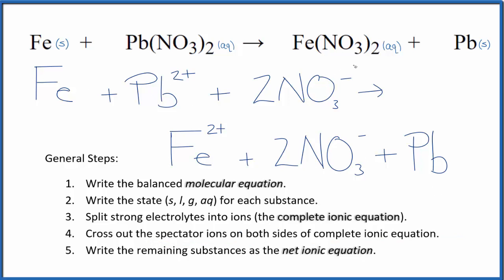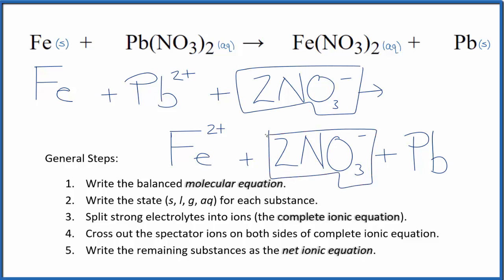In the reactants, I can see there are two nitrate ions. In the products, there are also two nitrate ions. So these are spectator ions — we're going to cross these out. Everything else is unique, so this is the net ionic equation for Fe plus Pb(NO₃)₂.